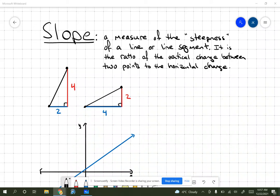Hi, everybody. I just wanted to take a few moments here and talk really quickly about slope. Okay, so slope is the measure of the steepness of a line or a line segment. And it's the ratio between the vertical change between two points to the horizontal change.